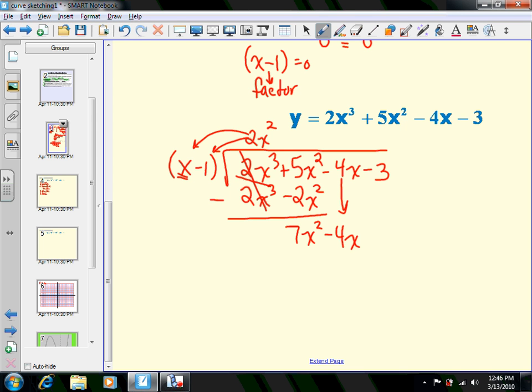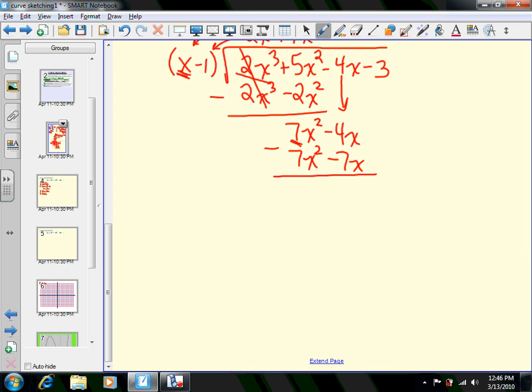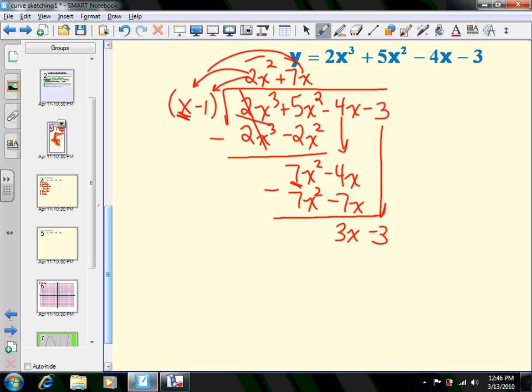Drop down the -4x. How many times does x go into 7x²? It goes in 7x times. 7x multiplies on both terms: 7x² - 7x. Subtract those two terms and we get 3x. Drop down the -3. How many times does x go into 3x? Positive 3 times. Multiply the +3 on both things: 3x - 3. You have a remainder of zero.